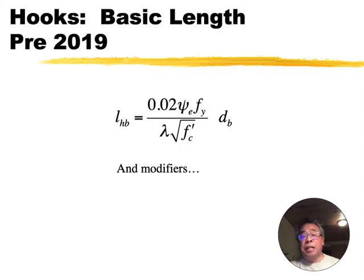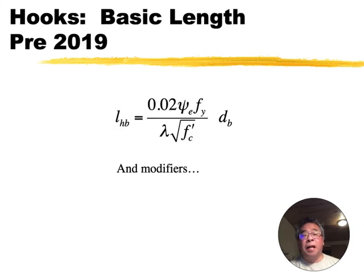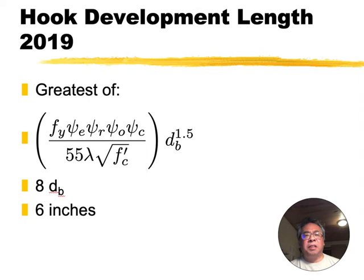The denominator, 0.02 is 1 over 50, now it's 1 over 55. There was an epoxy factor, now there's an E, R, O, and C factor, and the bar diameter is raised to the 1.5 power. There's quite a few factors here - E, R, O, C, and this lambda. Let's talk about these in turn. Notice that you calculate this equation, 8 bar diameters and 6 inches, and the greatest of those is your development length.